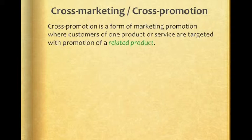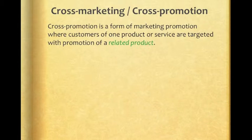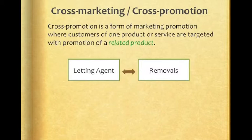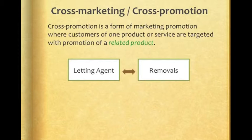Cross-marketing or cross-promotion is a form of marketing promotion where customers of one product or service are targeted with promotion of a related product。其实他这个说得很清楚，所谓的交叉行销就是同一个target audience，同一个客户群，他们会被相关的其他商品来作为行销的对象。来看一个例子，for example, letting agents and removals。Letting agents就是这个仲介业，有时候你去参观仲介业的办公室的时候，也许there will be flyers，可能是搬家公司removals的传单。那像这样子的手法，就是他们互相帮助，就叫做cross promotion, cross marketing，交叉的行销。